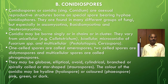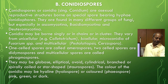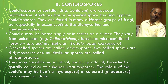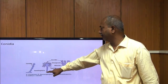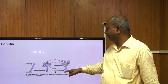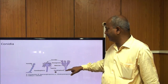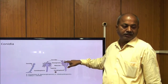As for the shape of conidia, they may be globose, elliptical, ovoid, cylindrical, branched, spirally coiled, or star-shaped (astrophores). The color may be hyaline (hyalospore) to colored (phaeospore), or pink, green, or dark. You can see the conidiophore with a distal swelling on which the conidia are borne, and in other structures: conidiophore, then metulae, then sterigmata, and on the sterigmata the conidia are bearing.